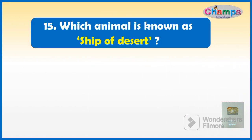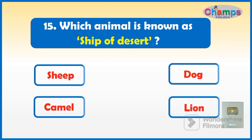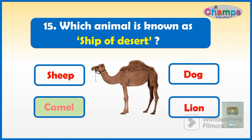Which animal is known as the ship of the desert? Options: Sheep, Dog, Camel, or Lion. And your time starts now. The correct option is Camel.